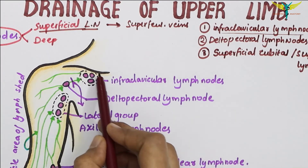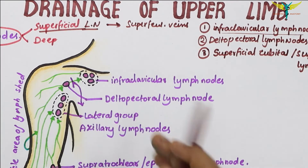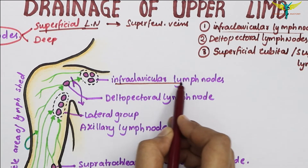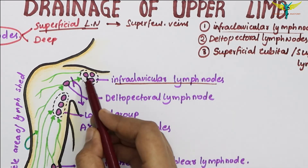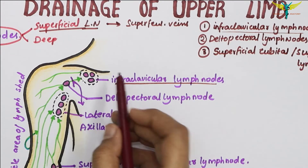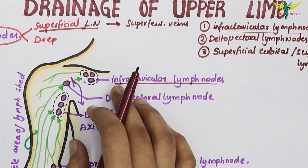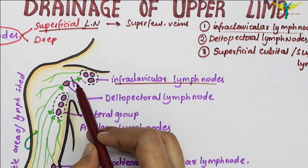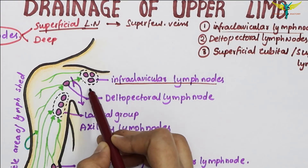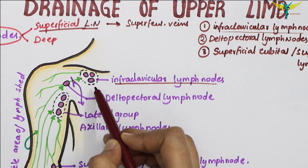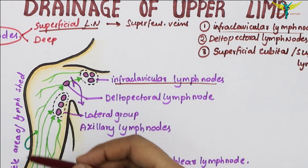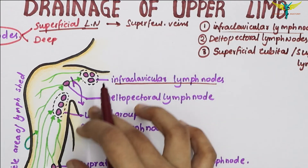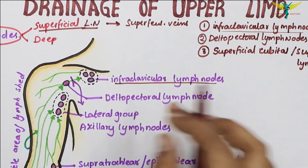The infraclavicular lymph nodes are one or two in number. They lie on the clavipectoral fascia, along the cephalic vein. They drain lymph from the thumb, including the upper part of the breast.